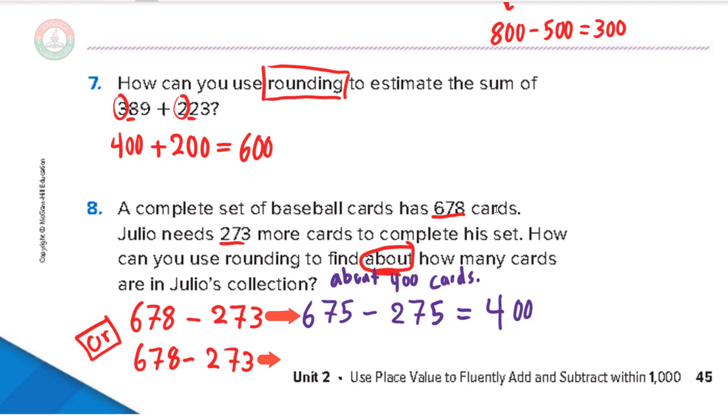So if I round to the hundreds, I'll circle the 6, underline the 7. The 7 is a strong digit, so it will make the 6, 7. It will give 1 to the 6, make it 7. 700. Minus, I'll circle also here, the 2, underline the 7. The 7 is a strong digit. So we will give 1 to the 2. It will be 3. So I'll push that 2 into 3. 300. So 700 minus 300 equals 400.